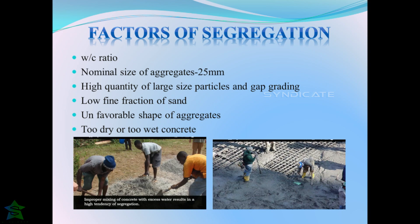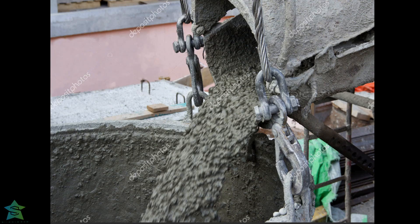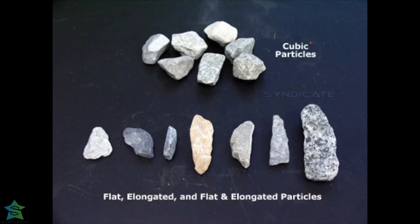In case of high water-cement ratio, the paste will be too thin to hold the materials together, hence water flows away from other materials leading to wet segregation. In case of insufficient water-cement ratio, the paste will be too dry and again it can't hold the materials together, which causes dry segregation. Hence, too wet or too dry concrete mixes must not be used.